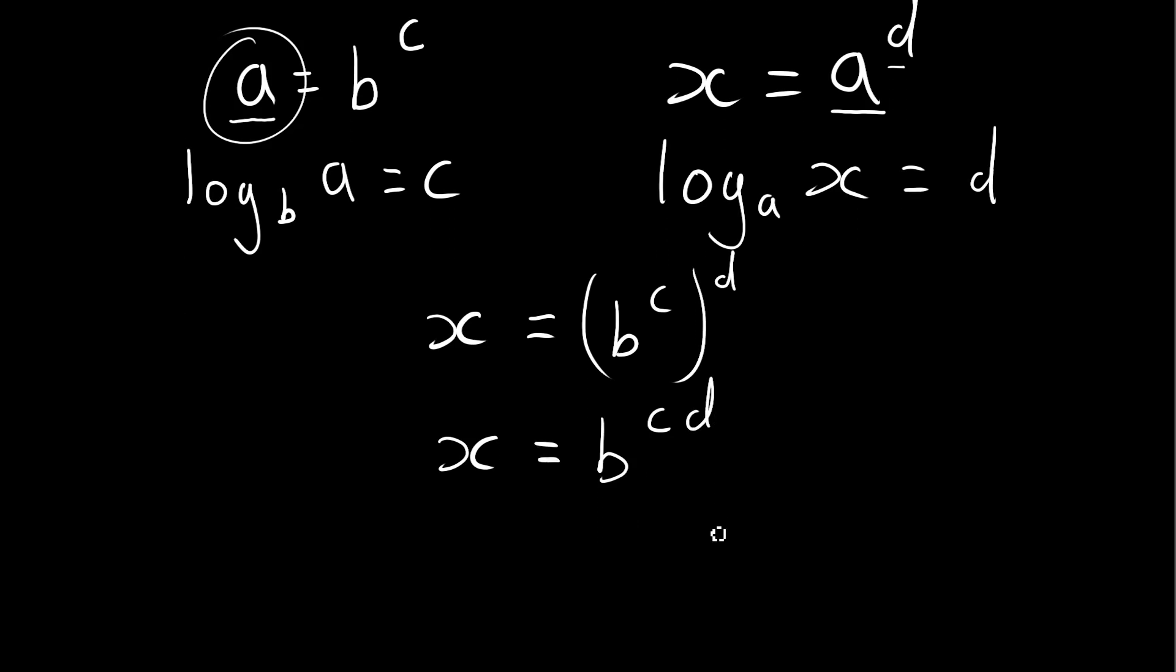We can take a log of this as well. So we take a log of this equation here. We have to the base b with the argument of x equaling, being equal to c times d. Now we've already got the values of c and d up here being log base b to the a and log base a to the x. So we can add these in to this expression here.